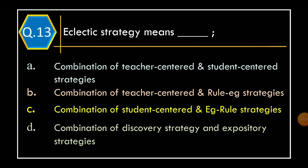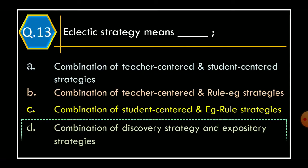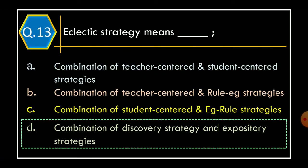Question 13. Eclectic strategy means: Option A – Combination of teacher centred and student centred strategies. Option B – Combination of teacher centred and rule egg strategies. Option C – Combination of student centred and egg rule strategies. Option D – Combination of discovery strategy and expository strategies. The correct option is Option D: Combination of discovery strategy and expository strategies.